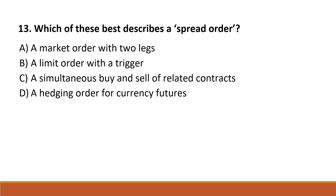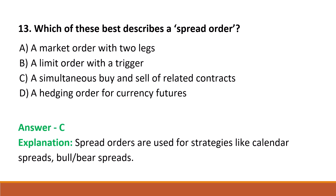Next question: which of these best describes a spread order? Option A: a market order with 2 legs. Option B: a limit order with a trigger. Option C: a simultaneous buy and sell of related contracts. The correct answer is Option C, a simultaneous buy and sell of related contracts.